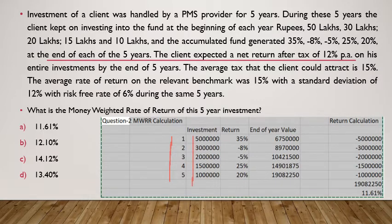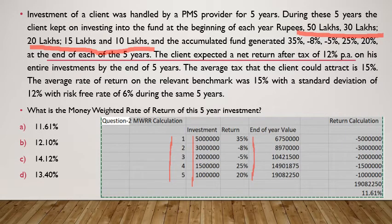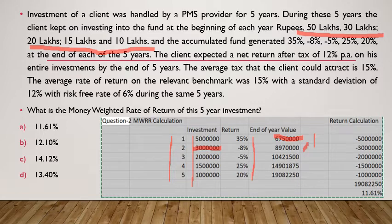The investment amounts come from the case values: 50 lakhs, 30 lakhs, 20 lakhs, 15 lakhs, and 10 lakhs. You then find the return values and calculate the year-end value. For the first year, the value increases by 35%. But in the subsequent year, despite making a new investment, the value decreases. So you add the first year-end value and the second year's investment, then multiply the sum by 0.92 to get the second year-end value.